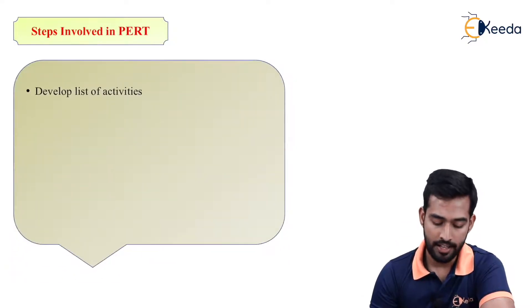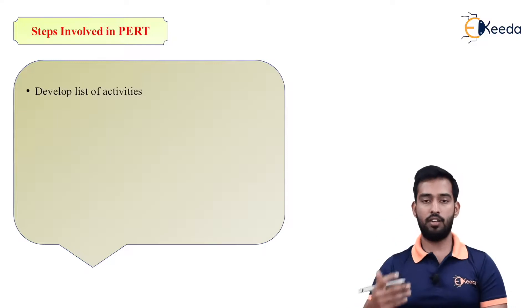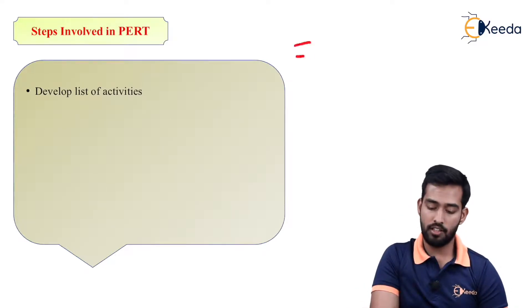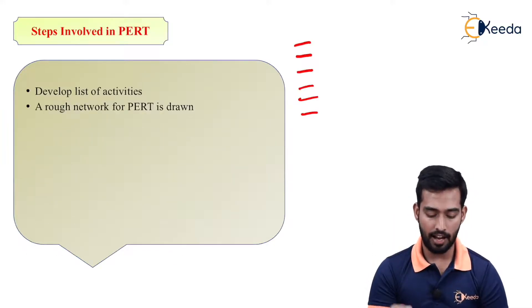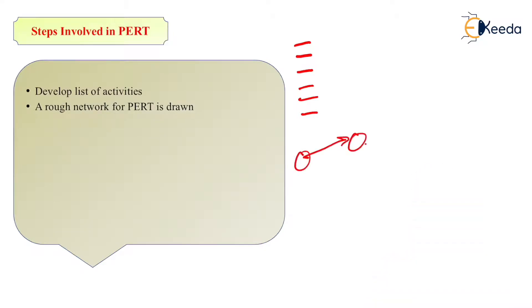Then what are the steps involved in PERT? Now first is develop list of activities. We have to find out the list of activities, divide the project in n number of activities. After finding out the activities involved, a rough network of PERT is done. So then we have to draw the network depending upon the activities we have found out and linking them together. After finding out networks, events are numbered from left to right. As we have seen the rules of numbering.